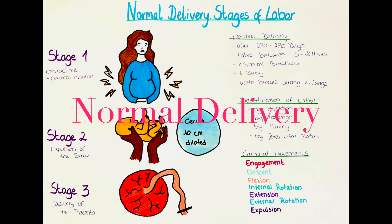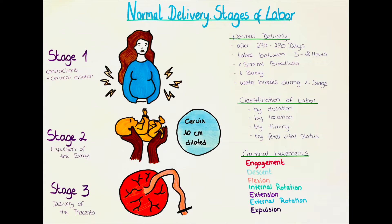What is a normal delivery? A normal delivery is the birth of one baby after a pregnancy of 270 to 290 days. The birth takes between 3 and 18 hours and the water breaks during the first stage of labor. The normal blood loss in a normal delivery is below 500 ml of blood. Everything else is considered an abnormal delivery and requires special attention of the gynecologist.